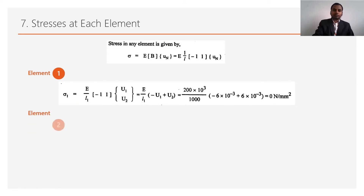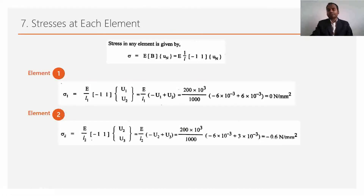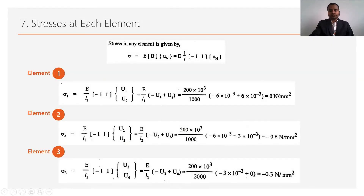For element number 2 (nodes 2 and 3): σ₂ = (E/L₂)(−u2 + u3). Putting in all values gives σ₂ = −0.6 N/mm². For element number 3 (nodes 3 and 4): same process using u3 and u4, giving σ₃ = −0.3 N/mm².